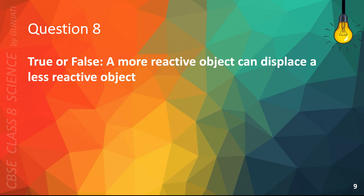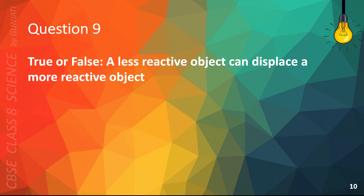Question 8 — True or false: A more reactive object can displace a more reactive object. The correct answer is False. Question 9: A less reactive object can displace a more reactive object. The correct answer is False.